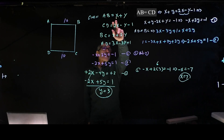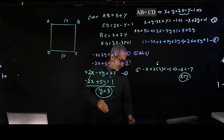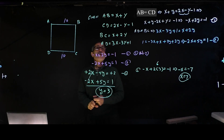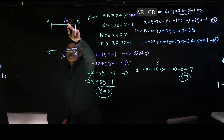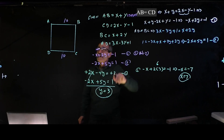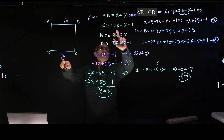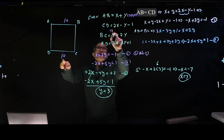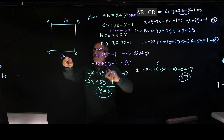Substituting x equals 7 and y equals 3 back in: AB equals 7 plus 3 equals 10. And DC equals 2 times 7 minus 3 minus 1, which is 14 minus 3 minus 1, also equals 10. The sides match, confirming our solution.